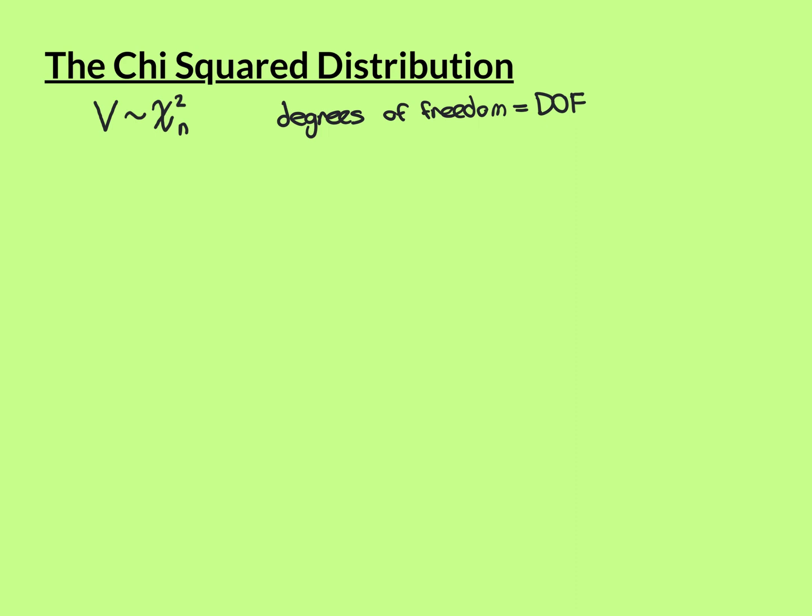The degrees of freedom needs to be a positive integer — a natural number: 1, 2, 3, 4, 5, etc. You'll see, when we look at where the chi-square distribution comes from, why it can only be one of those counting numbers. So n is the degrees of freedom, and n needs to be a natural number.